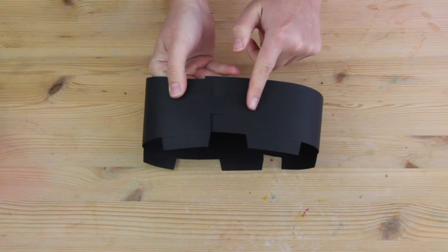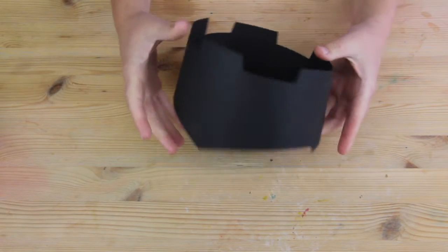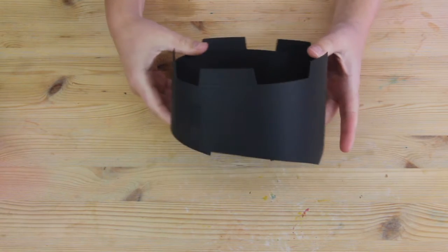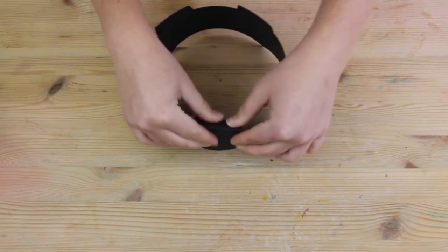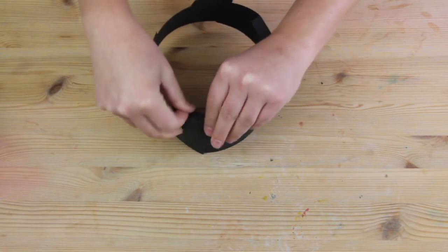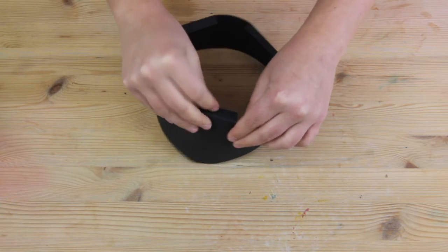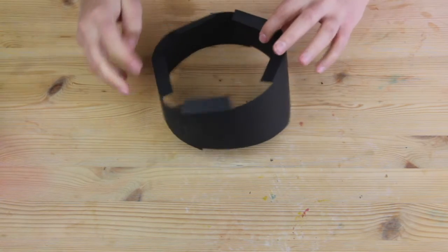Now we have the base of our hat. We just take these tabs along the top and fold them inwards. To complete our hat, all we need to do is use these tabs along the top